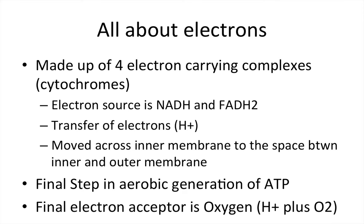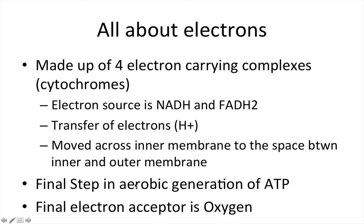The electron transport chain, as the name implies, is all about electrons. The chain is made up of four electron-carrying complexes, also called cytochromes. Their electron source is NADH and FADH2, and they result in the transfer of electrons in the form of H+. The H+ is moved across the inner membrane to the space between the inner and outer membrane, and the final electron acceptor is oxygen.